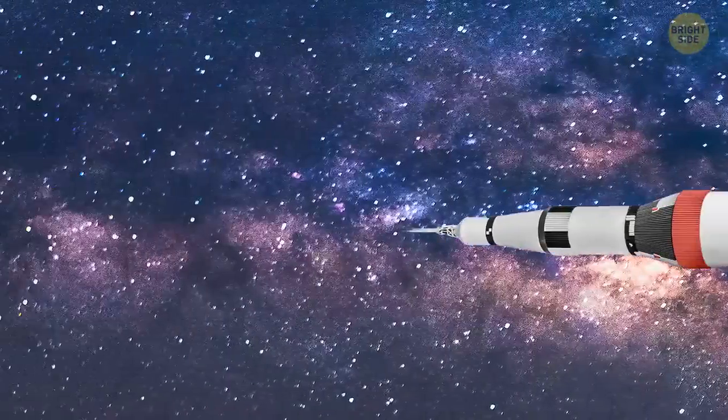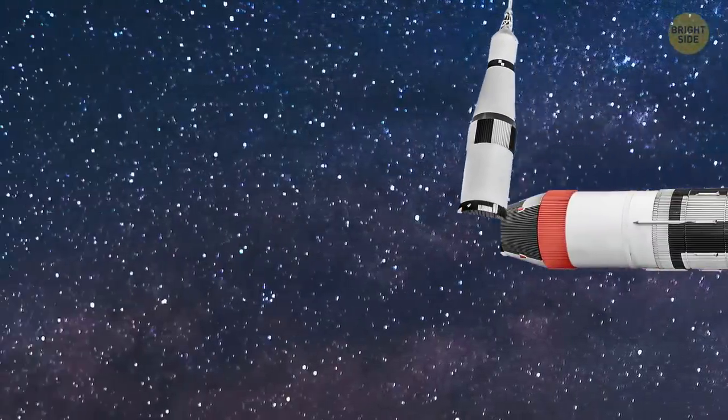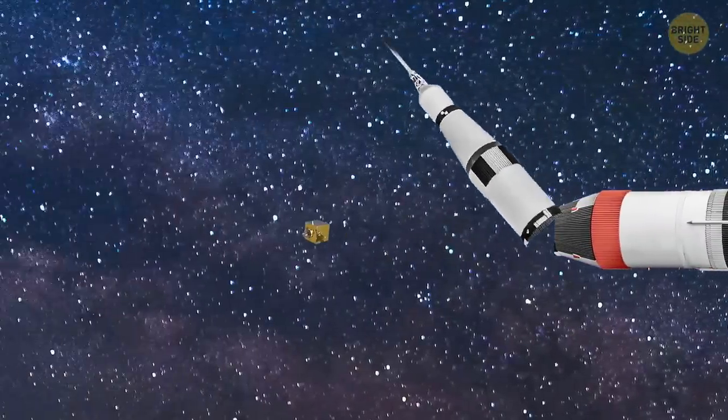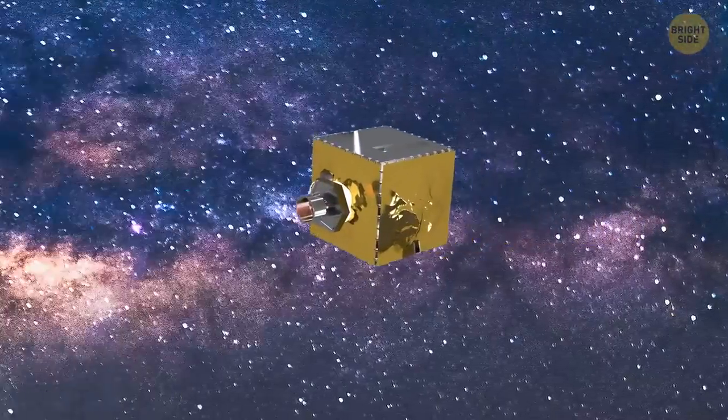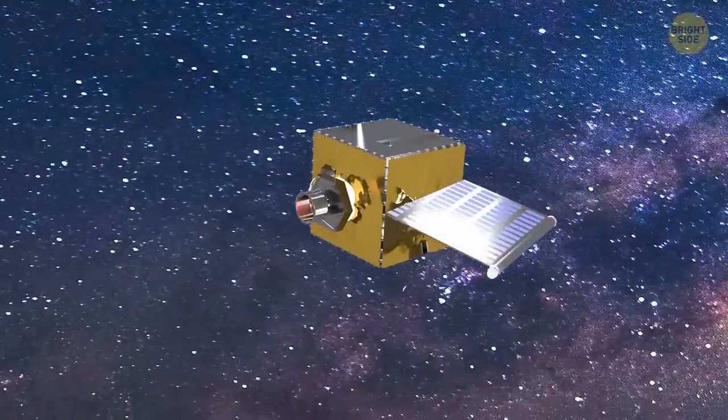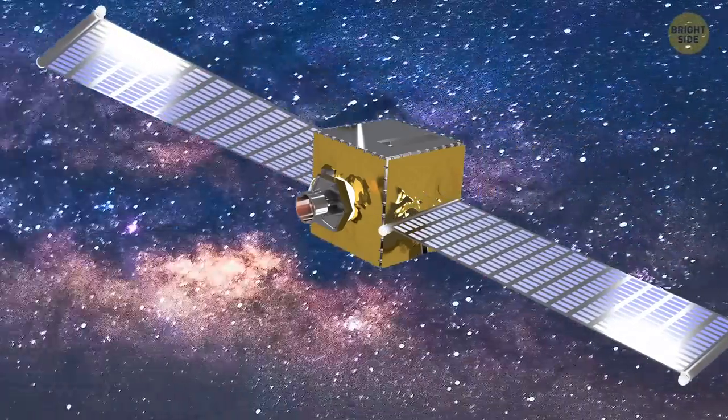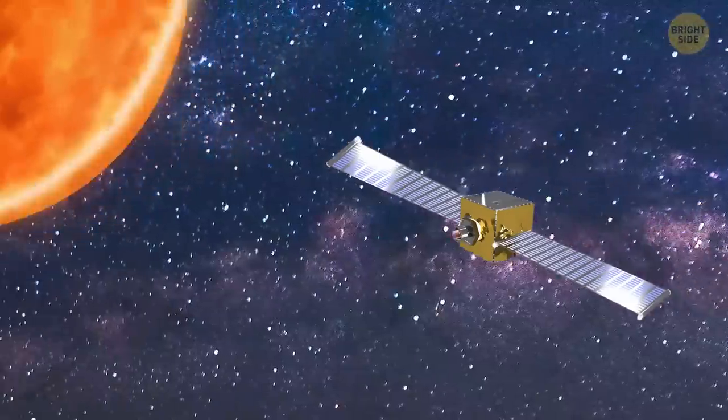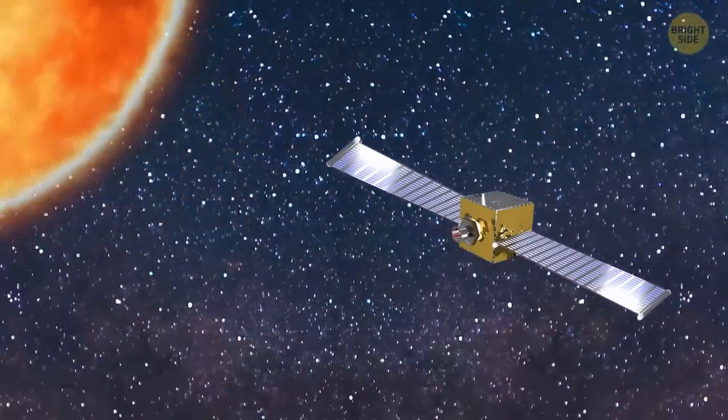The cargo capsule then opens and releases the DART spacecraft. DART stands for Double Asteroid Redirection Test. Once released, the spaceship deploys two large solar panels. It'll convert solar energy into electrical energy to power a revolutionary ion engine.